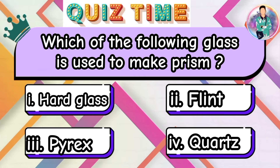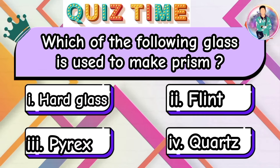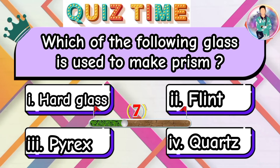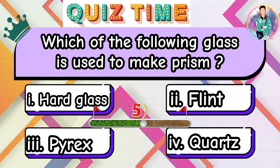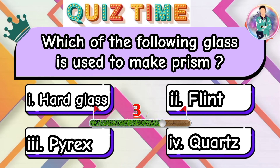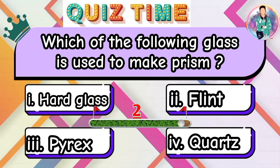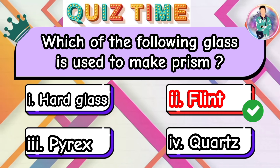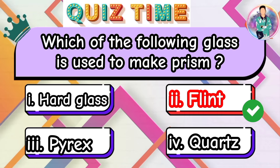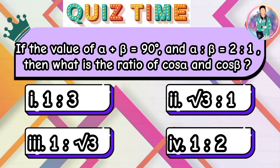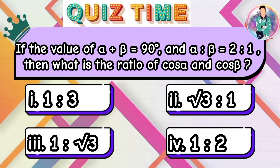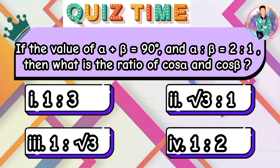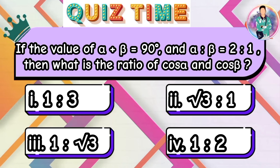Which of the following glass is used to make a prism? If the value of alpha plus beta is equal to 90 degrees and the ratio of alpha to beta is equal to 2:1, then what is the ratio of cos alpha and cos beta?